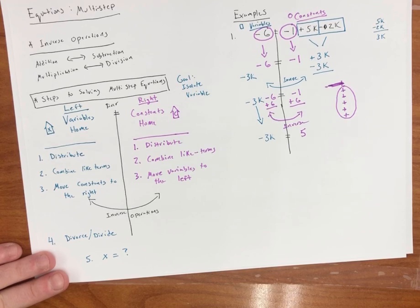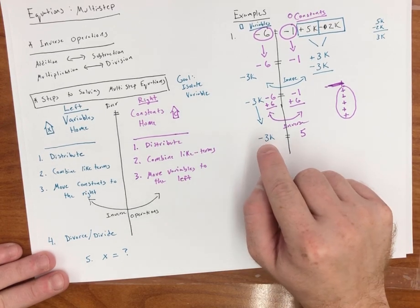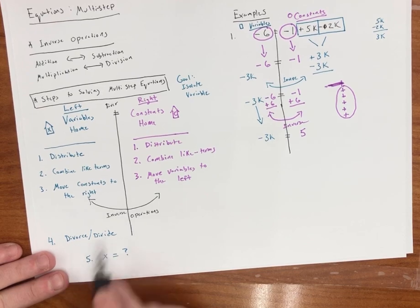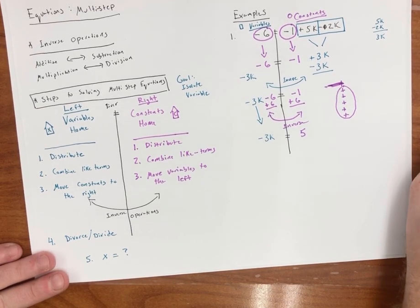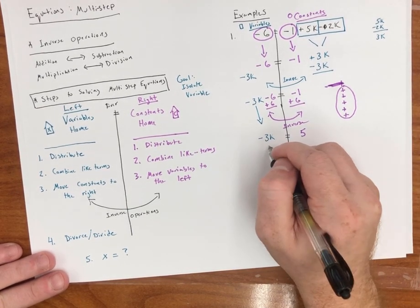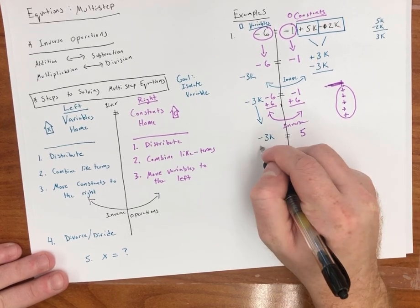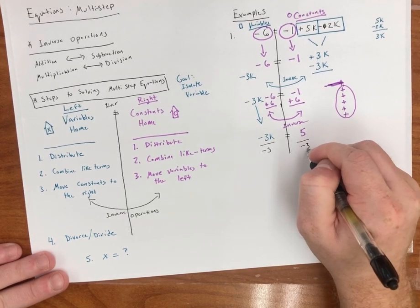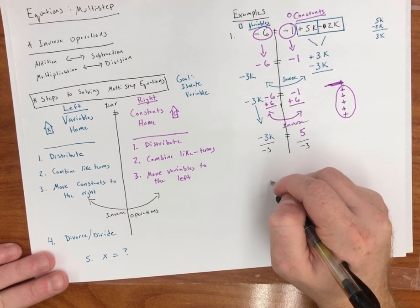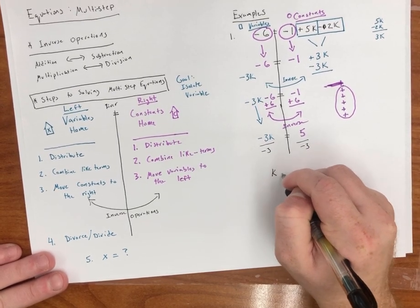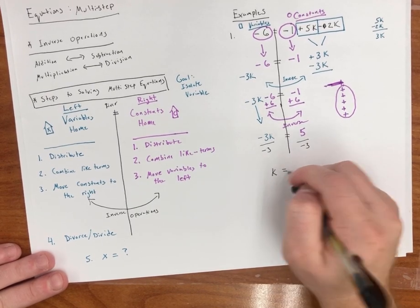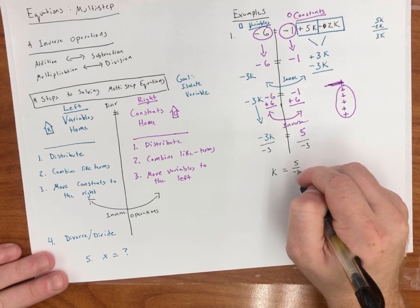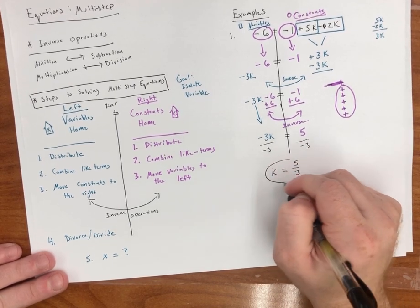So now, all we have to do last is we need to move this negative 3. Remember, we're on step 4 now. We have to divorce and divide. So I need to divorce negative 3 from the k. So I divide by negative 3 here. And I divide by negative 3 here. Now, step 5. My variable k is equal to 5 over negative 3. You can leave your answer just like that.